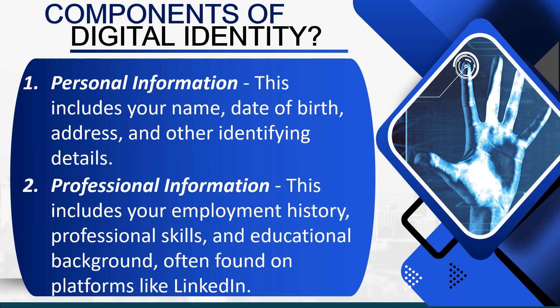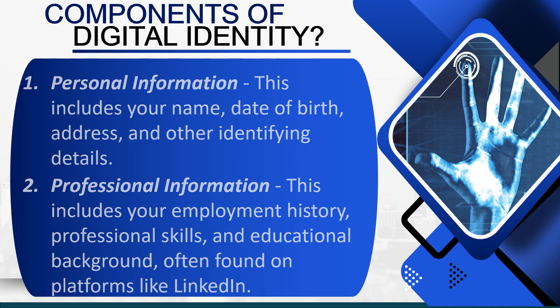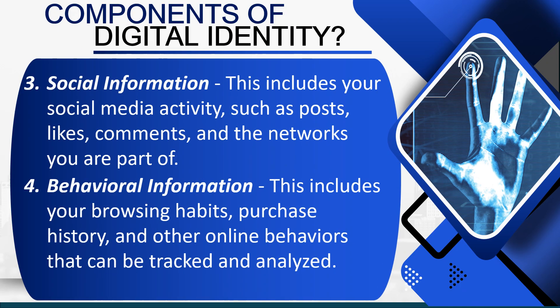The components of digital identity: 1. Personal information — this includes your name, date of birth, address, and other identifying details. 2. Professional information — this includes your employment history, professional skills, and educational background, often found on platforms like LinkedIn. 3. Social information — this includes your social media activity, such as posts, likes, comments, and the networks you are part of. 4. Behavioral information — this includes your browsing habits, purchase history, and other online behaviors that can be tracked and analyzed.